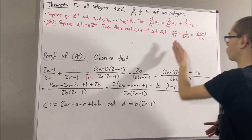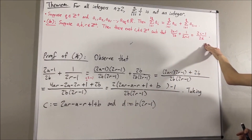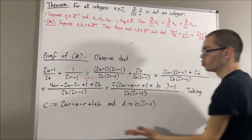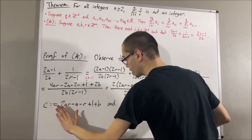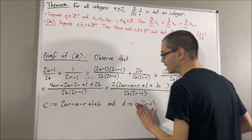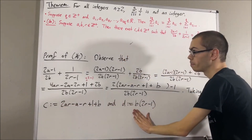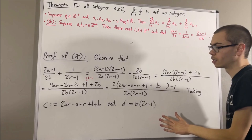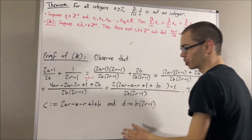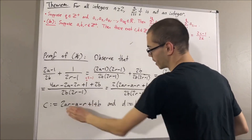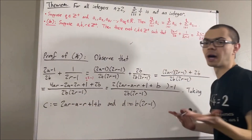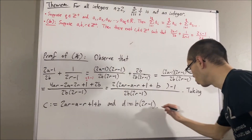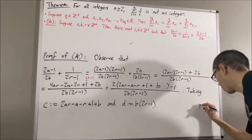Well then, that tells us (2a − 1)/2^b + 1/(2^r − 1) has the form (2c − 1)/2^d, which is exactly what we want. And it is, in fact, true that our choices for c and d here are positive integers. So this proves ★.